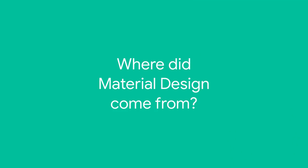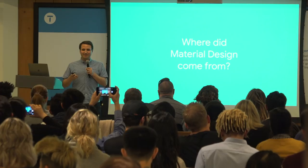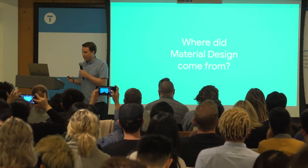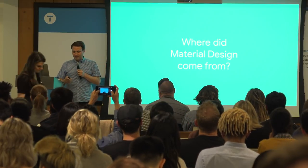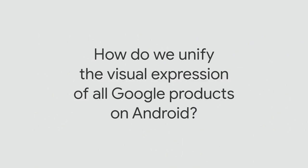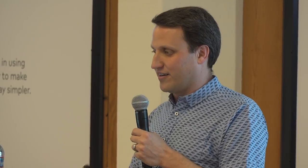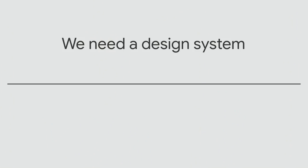Many of you have probably heard about material design. When I started on material design it wasn't called that — it didn't even have a name. All we had was the outline of a problem: how do we unify the visual expression of Google products on Android? The answer to this question comes in two parts. The first part, the obvious part, is we need a design system.